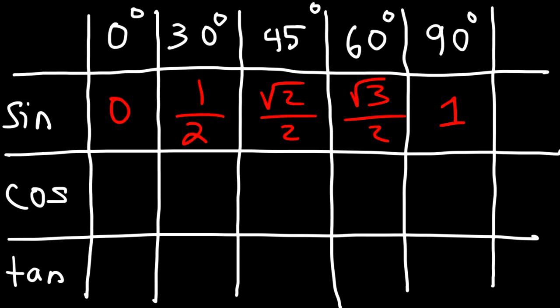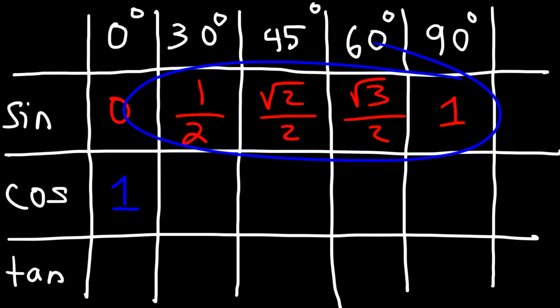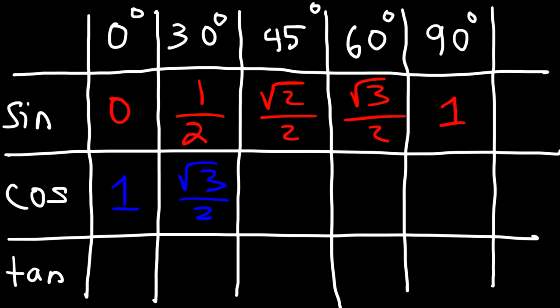Cosine is basically the reverse of sine. Cosine 0 is 1, and we're going to have the same values but going in the other direction. Cosine 30 is the square root of 3 over 2. Cosine 45 is root 2 over 2. Cosine 60 is 1 half. And cosine 90 is 0.